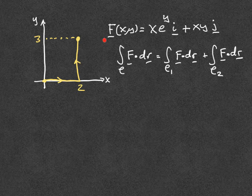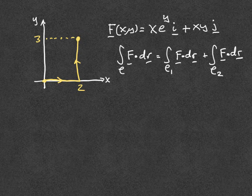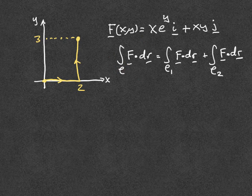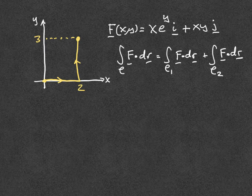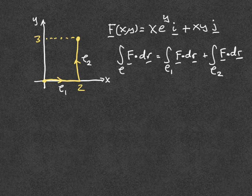I've written out our vector field and shown the path we're calculating. The idea is that we can divide this line integral over the full path into the line integral from the first segment and then the second segment — very much like a normal integral where the integral from A to C equals the integral from A to B plus the integral from B to C. I'll call this path C1 and this path C2.